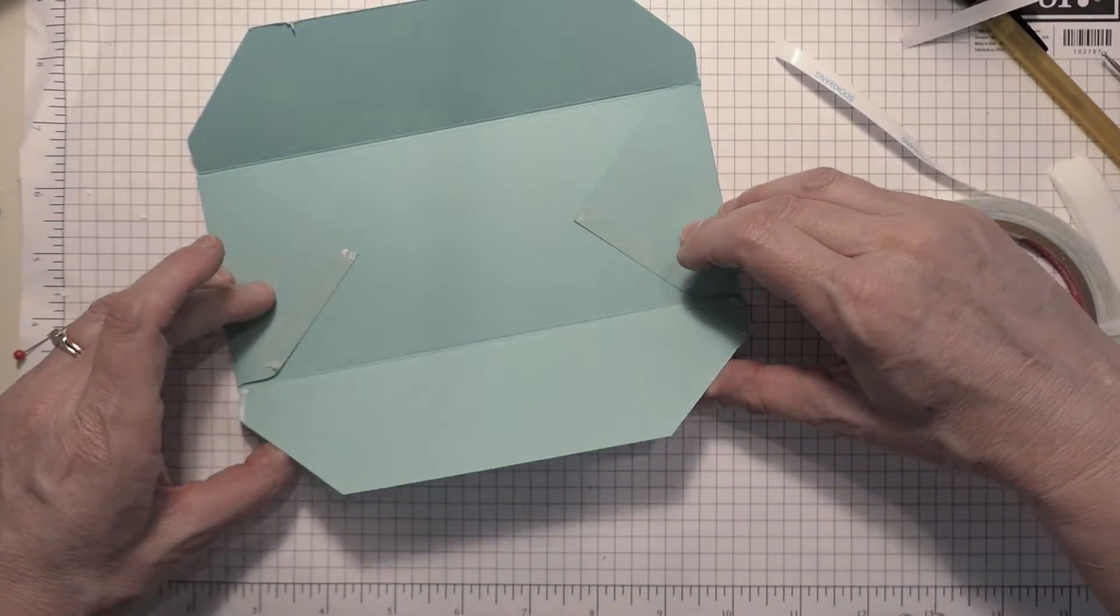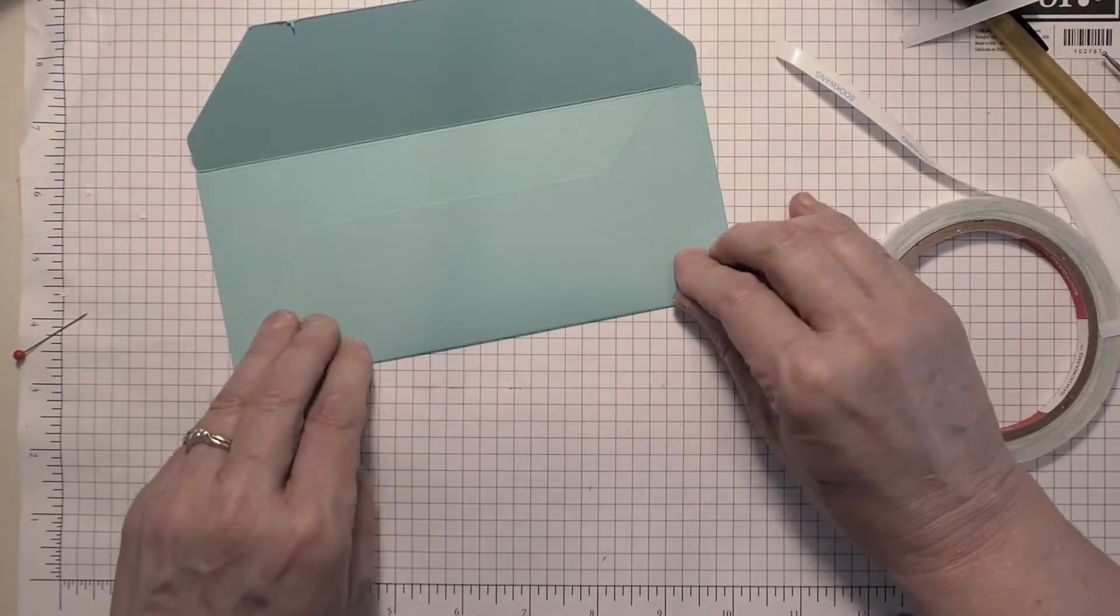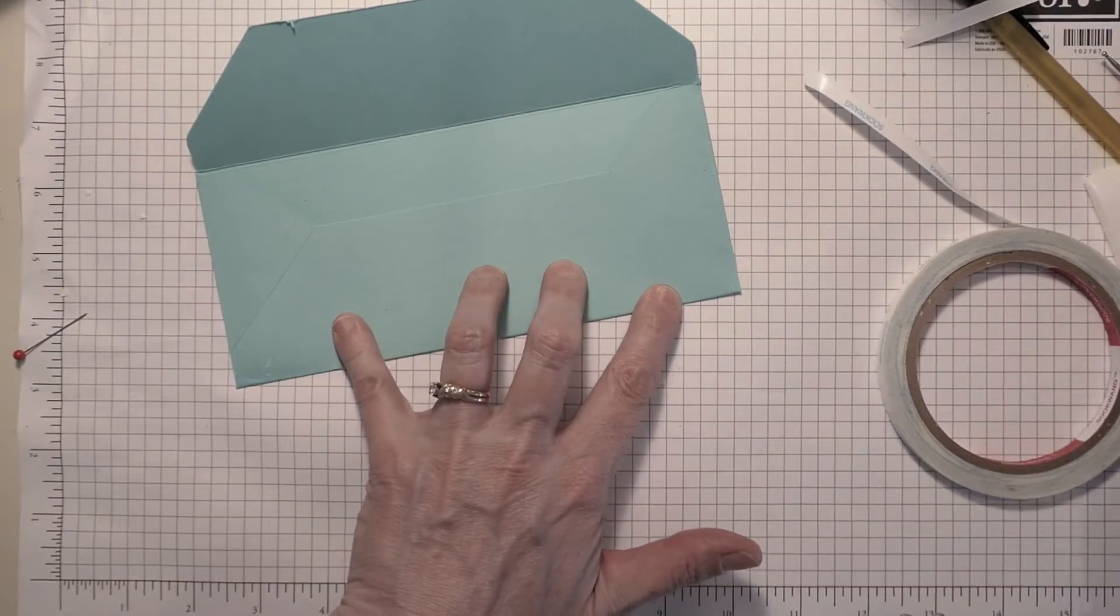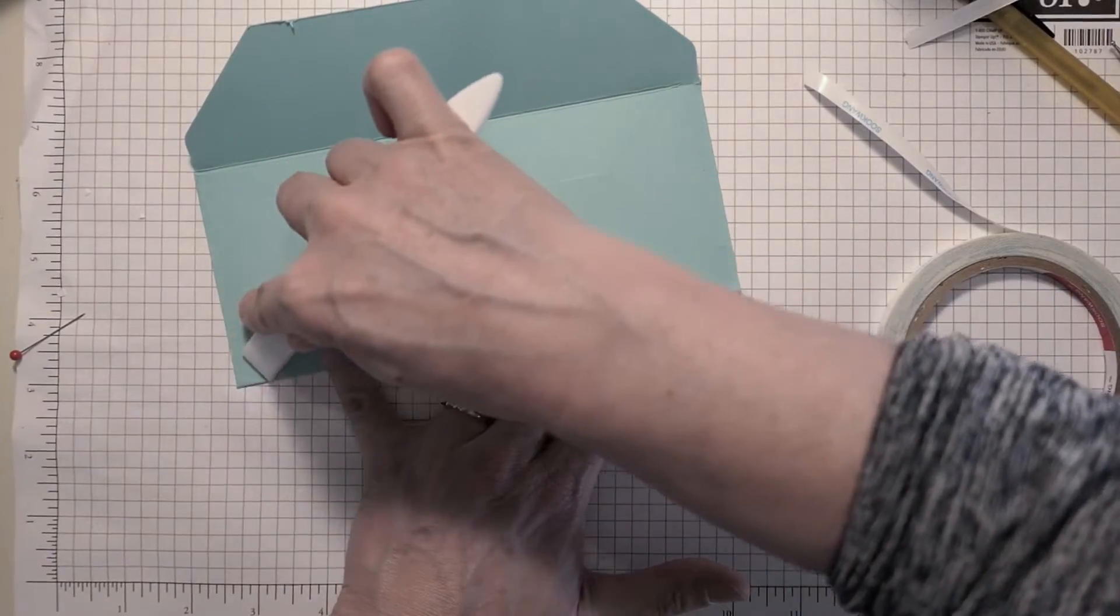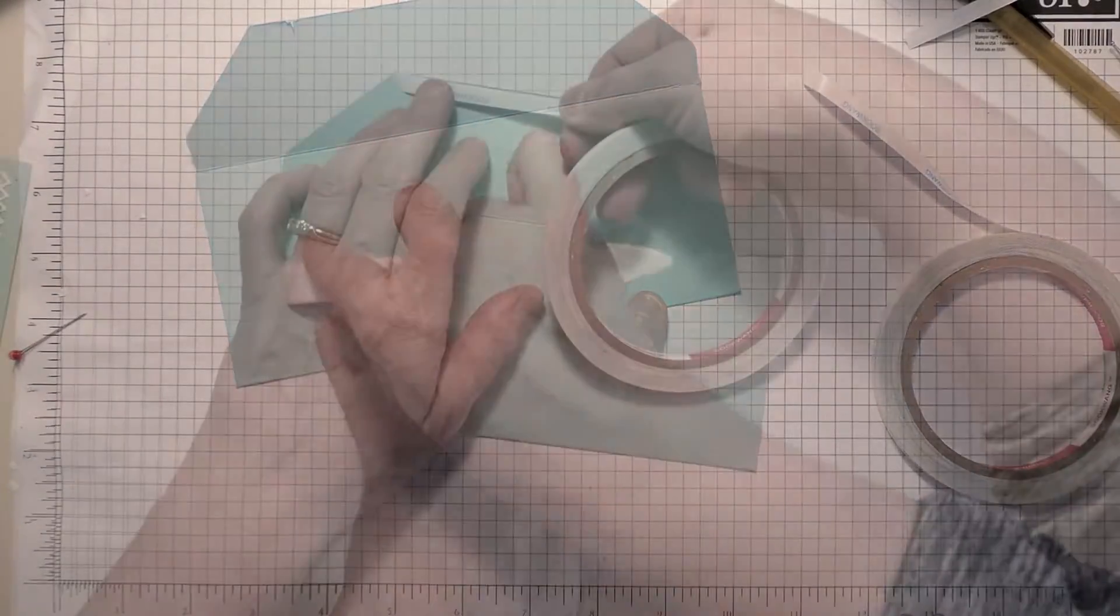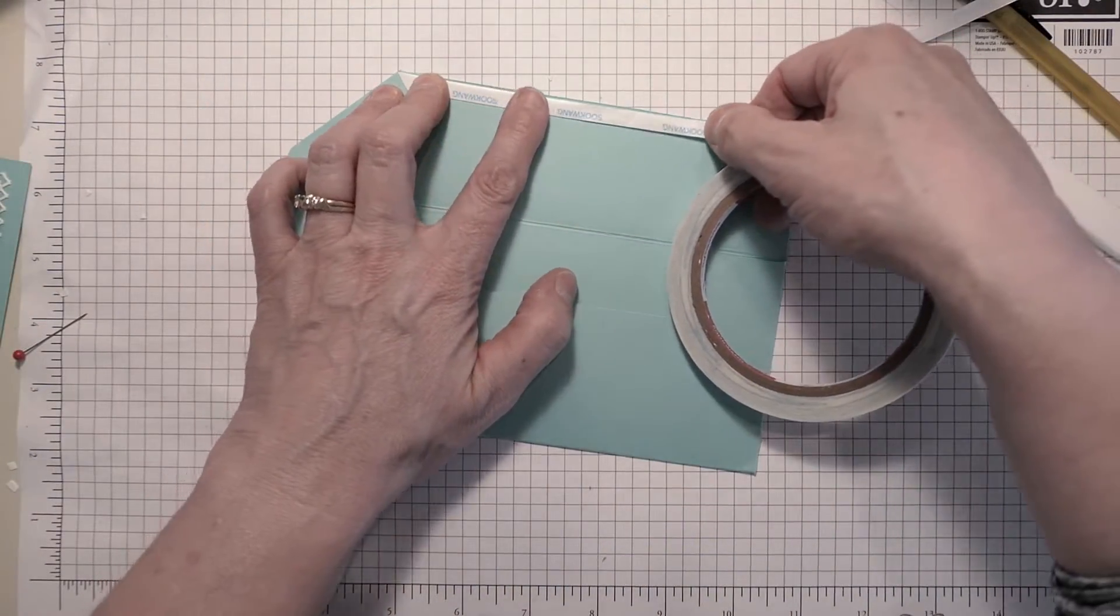I cut down the flaps just a little bit so that everything would close nicely, and then I ran some glue along the edges and just made sure that that was sealed really well.